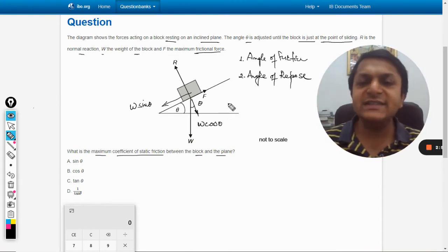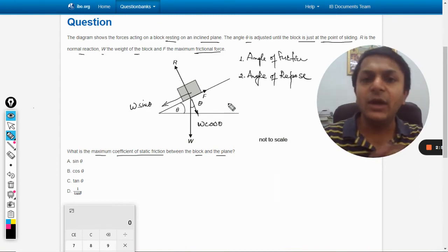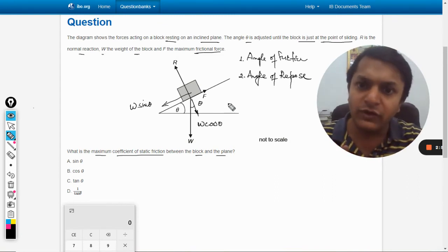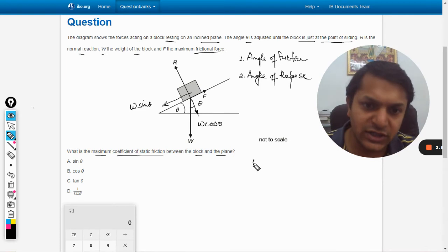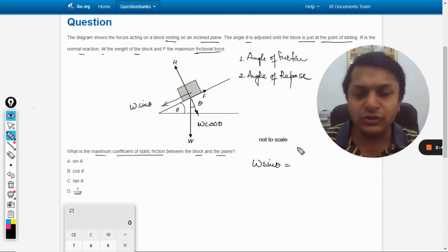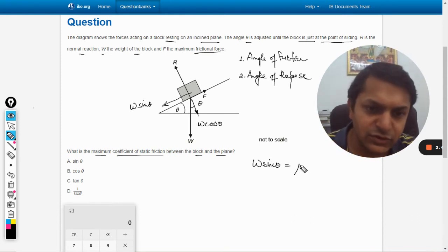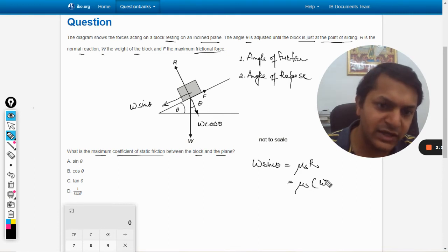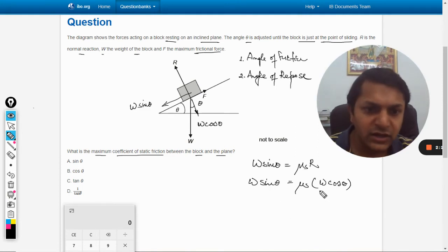There will be friction acting opposite to this. Because this is the limiting case, the upward force is equal to the downward force. So W sin theta, the force trying to skate the body, is equal and opposite to the friction which is maximum, so it will be μs into the normal reaction R.